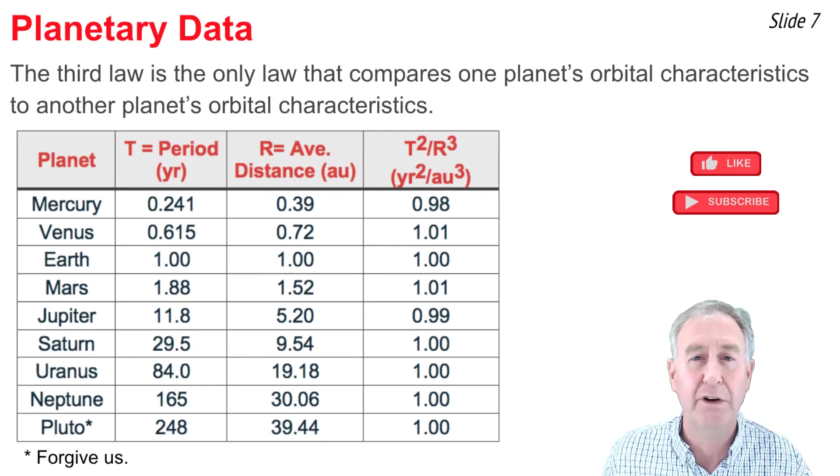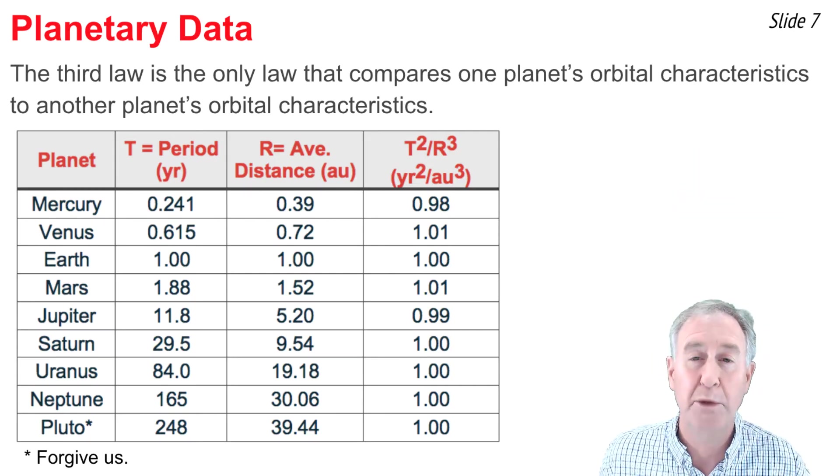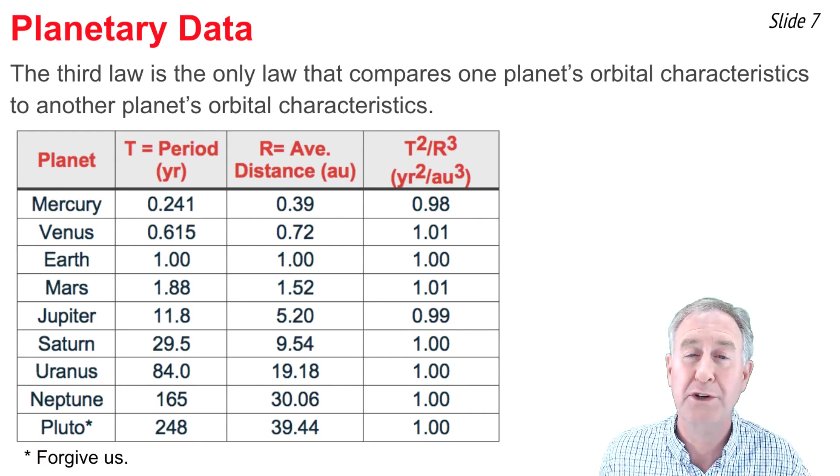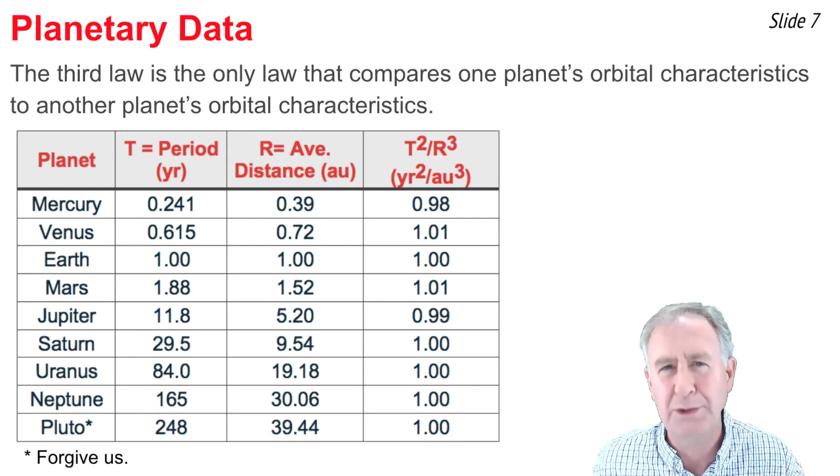Here we see planetary data for all eight or nine planets, and we'll note that in the last column, when we take the T² / R³ ratio for every planet, it's approximately the same. It's very close to the same, in fact.